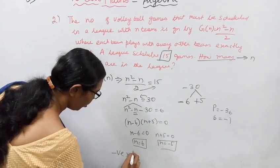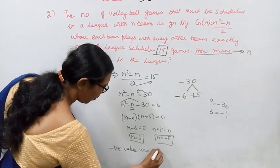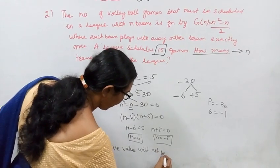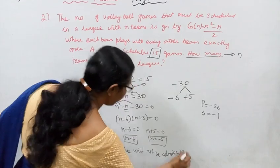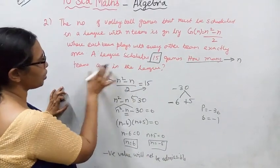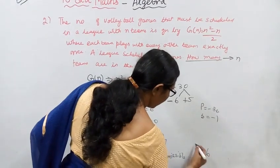Negative value will not be admissible. We will not accept the negative value. How many teams are there in the league? n = 6.